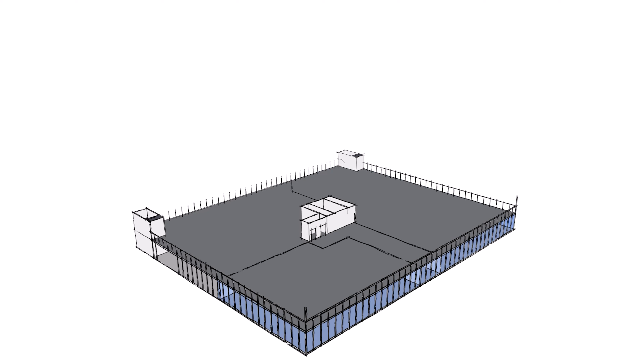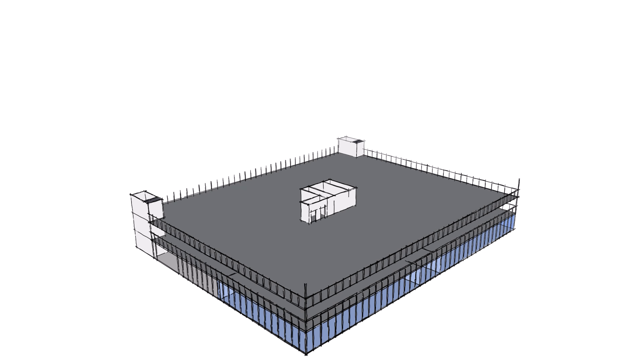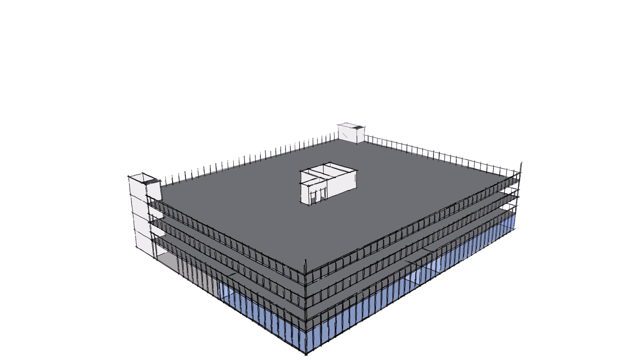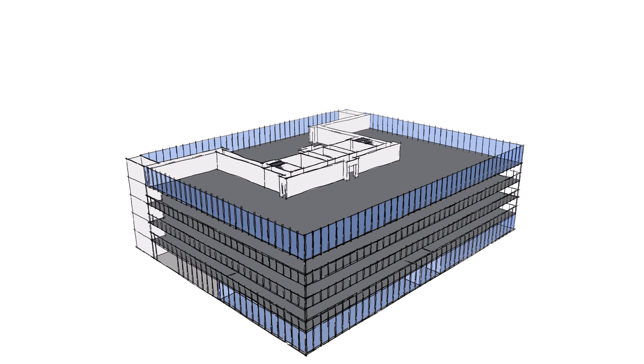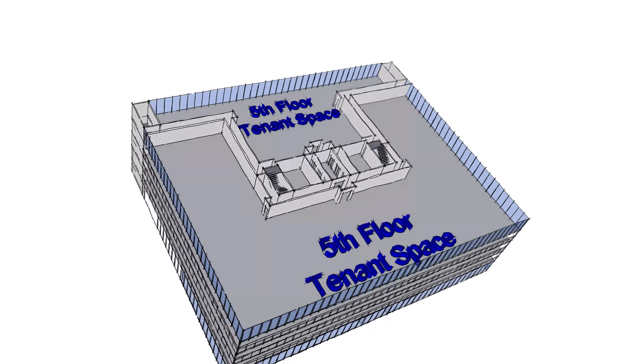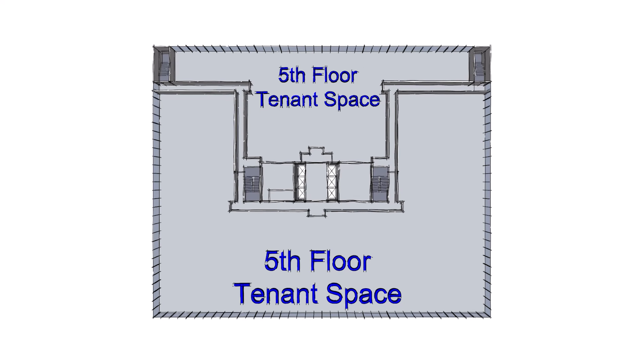Let's assume that we go up the elevators, past the garage levels, and onto the fifth floor. Assuming we want to access the fifth floor tenant space, we get out of the elevator and into the elevator lobby, shown in green, and then we go into the corridor, shown in blue, which will lead into the tenant space.